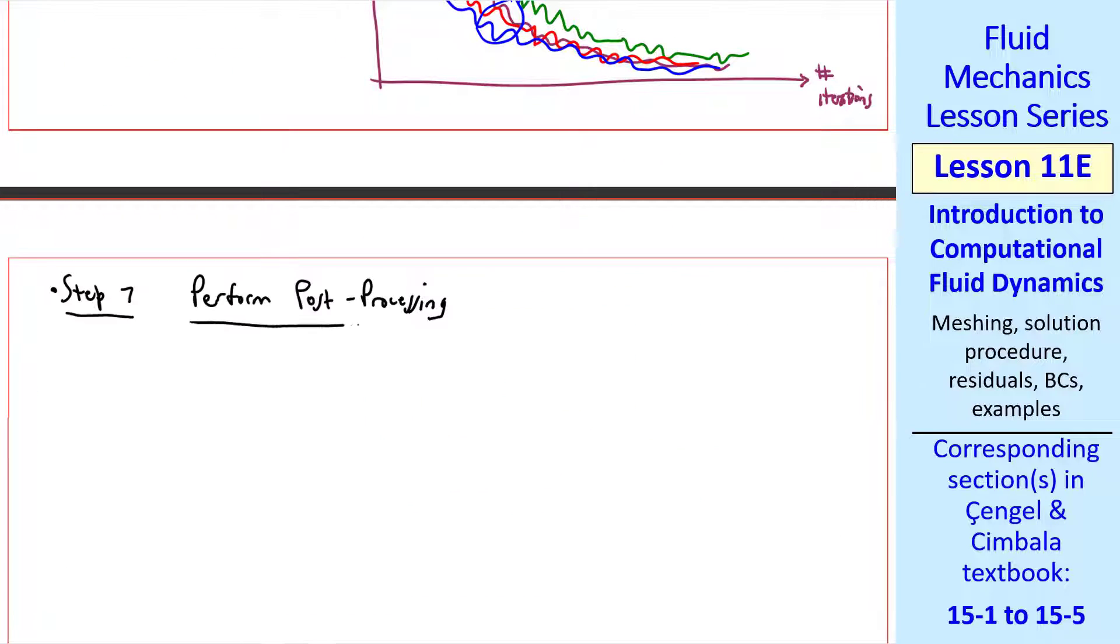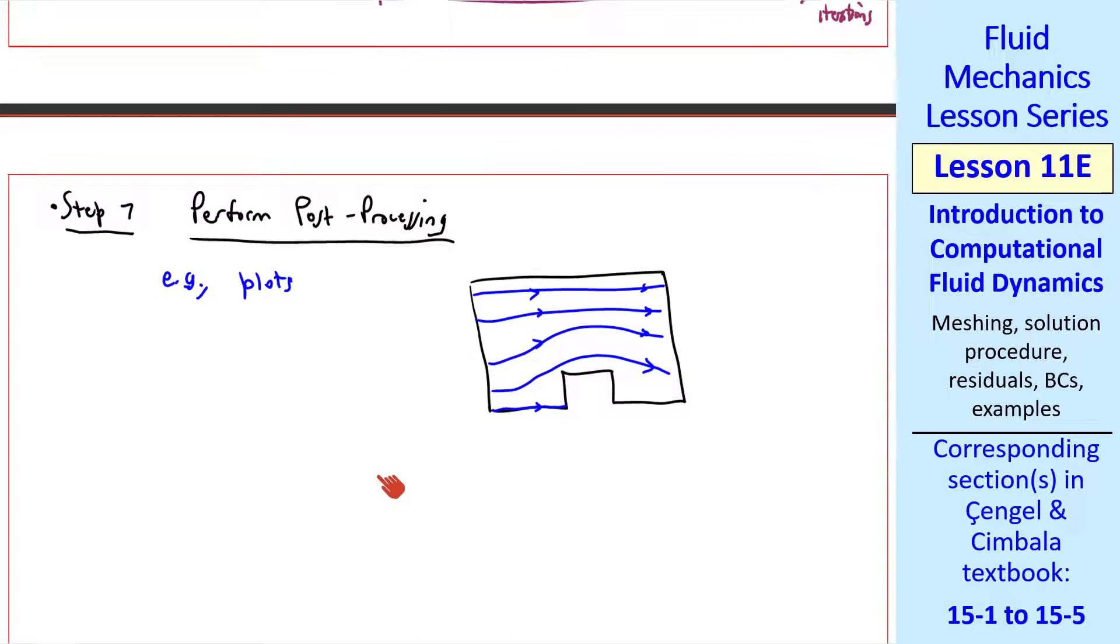Step seven is to perform post-processing, like streamlines or contour plots. For our example, flow over a block, your streamlines might look something like this. And I'll show you some real examples in a minute.